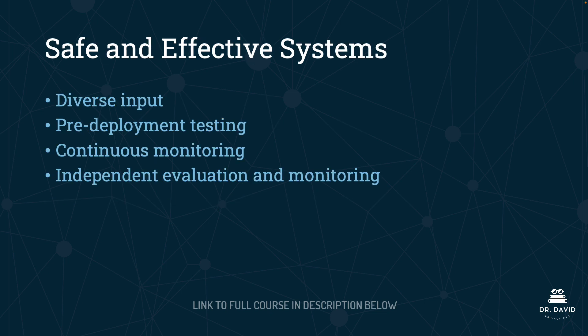Principle number one is safe and effective systems. This principle advocates for diverse input, pre-deployment testing, continuous monitoring, and independent evaluation and monitoring. Diverse input means that our dataset should be reliable and bias-free, which requires thoroughly vetting the data before model training. One tool at our disposal is data sheets for datasets, which essentially tracks the data lineage for us — that's one tool we can use to help ensure our models are being trained on diverse input.